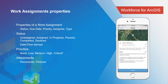Work assignments have properties including status, due date, priority, assignee, and type. The status can be unassigned, assigned, in progress, paused, completed, or declined. Assignments are time-stamped so you can tell exactly when they were created. Priority can be set to none, low, medium, high, or critical, so field workers know how quickly to respond. You can also include attachments such as documents and pictures.